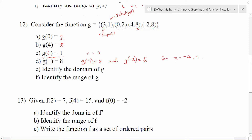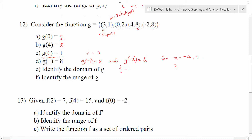For parts e and f, we identify the domain and range. The domain is the set of all x or input points, so we have 3, 0, 4, and negative 2. In order from smallest to biggest: negative 2, 0, 3, 4 — that's my domain. The range is the set of all possible y values. The y values are 1, 2, 8, and 8. We don't need to repeat the 8 in set notation, so the range is 1, 2, 8.